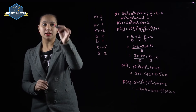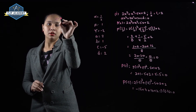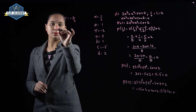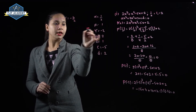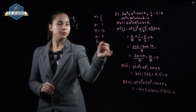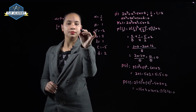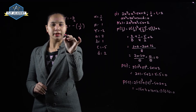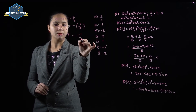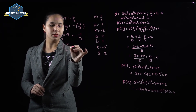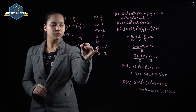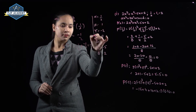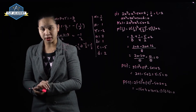Checking the relation α + β + γ = -b/a. Substituting: α = 1/2, β = 1, γ = -2. Simplifying, we get -1/2 = -b/a = -1/2. So the relationship between zeros and coefficients is verified here.